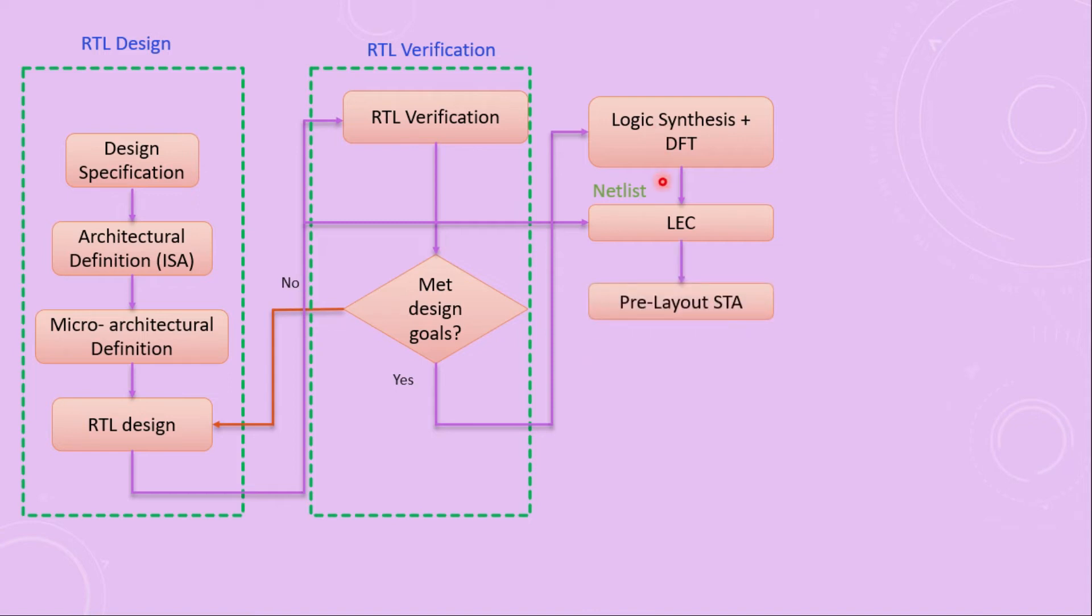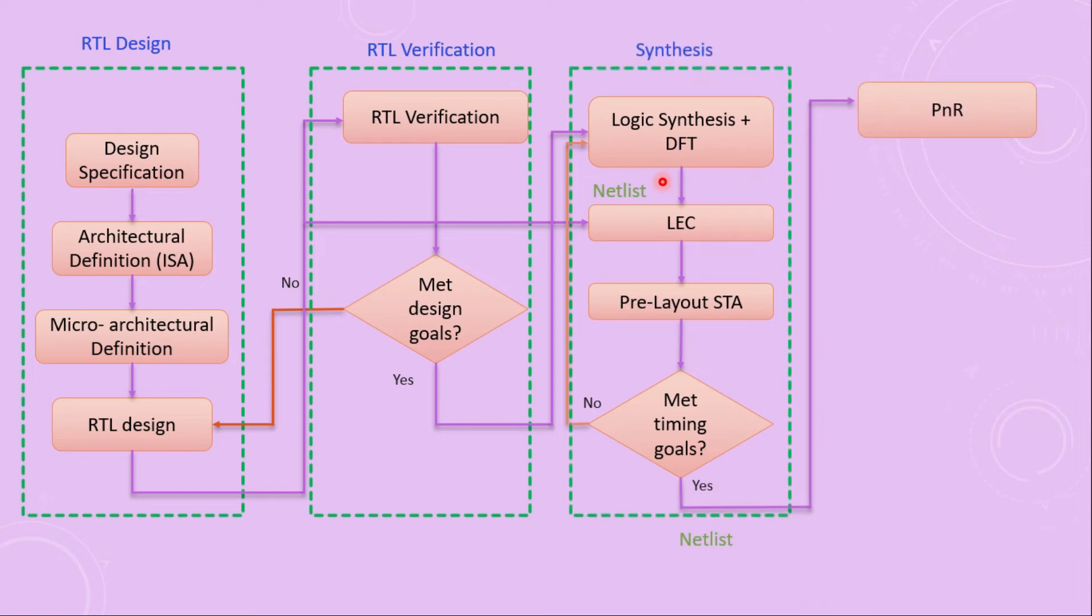This is an analysis where not much data of the cell delay and net delay is given, because it's not yet physically placed and routed. But it will make sure that timing is okay to some extent. And if it passes the timing requirements, then it will be sent to the next step. Otherwise, again, the synthesis will happen. And this entire flow is basically called as synthesis.